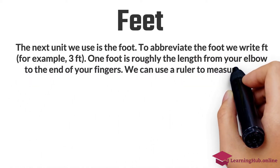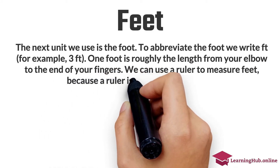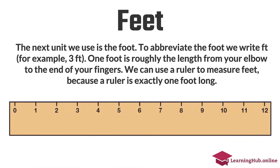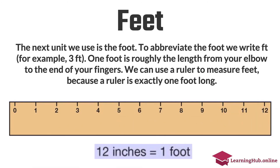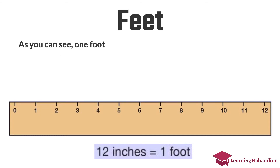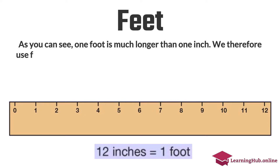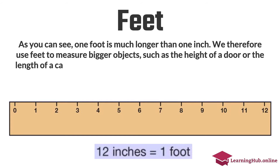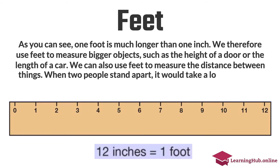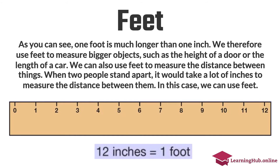We can use a ruler to measure feet, because a ruler is exactly 1 foot long. As you can see, 1 foot is much longer than 1 inch. We therefore use feet to measure bigger objects, such as the height of a door or the length of a car. We can also use feet to measure the distance between things. When two people stand apart, it would take a lot of inches to measure the distance between them — in this case, we can use feet.